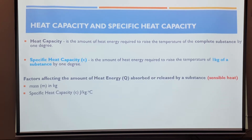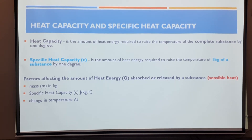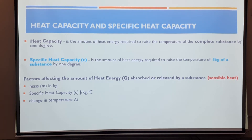We're going to look at the three factors that determine how much heat a substance can absorb or give away. The heat that can be absorbed or given away is called sensible heat. Those three factors are the mass, the specific heat capacity, as well as the change in temperature.